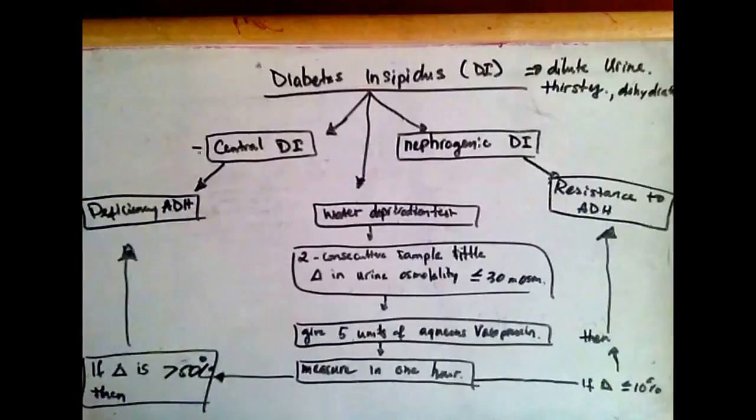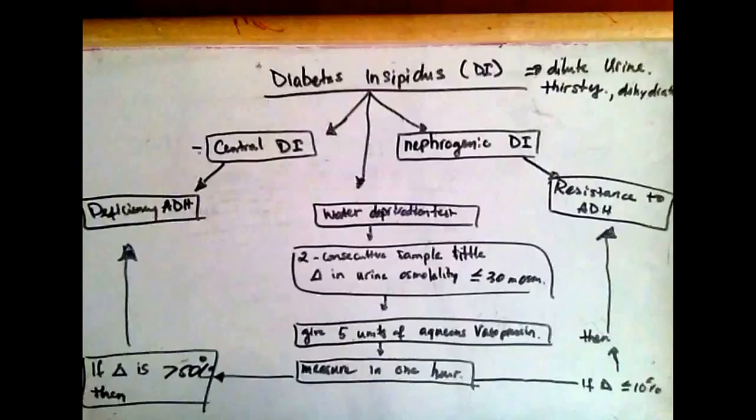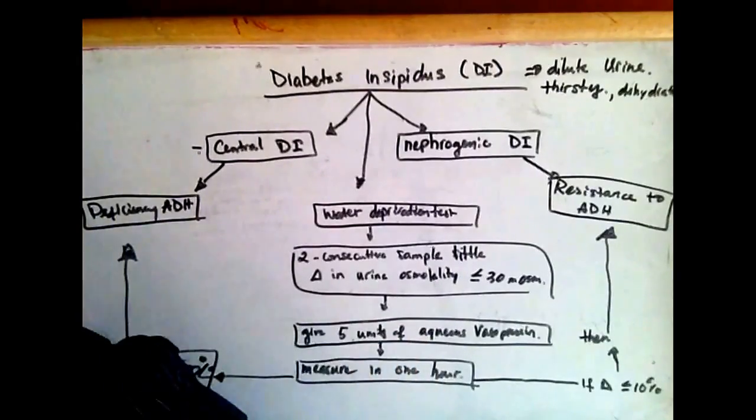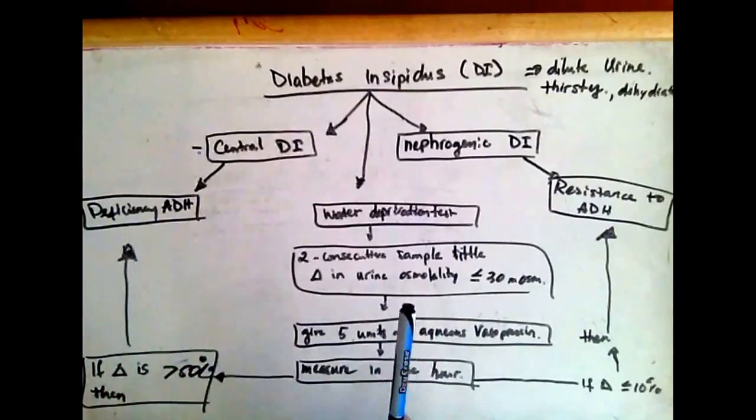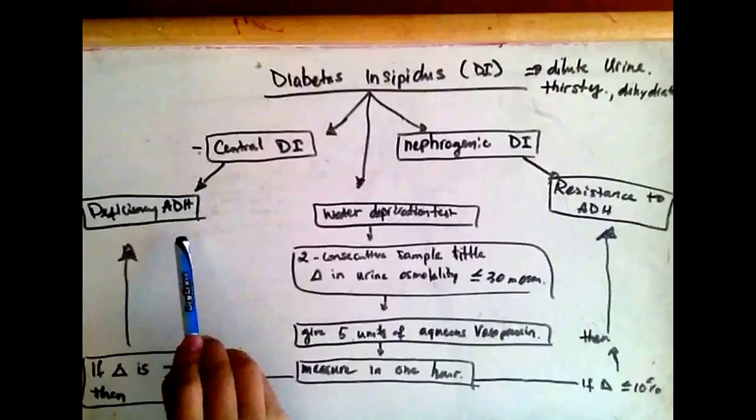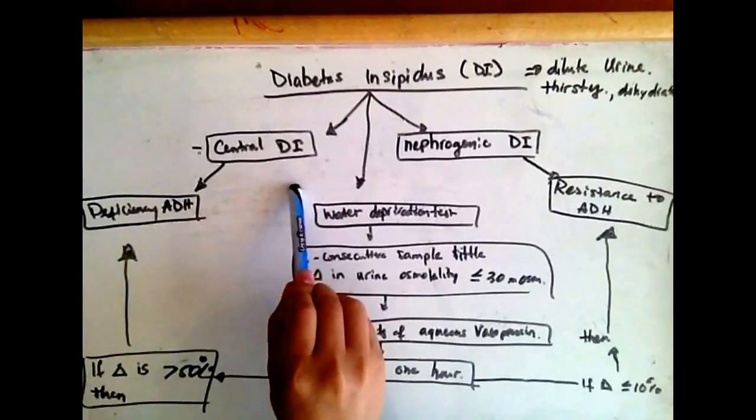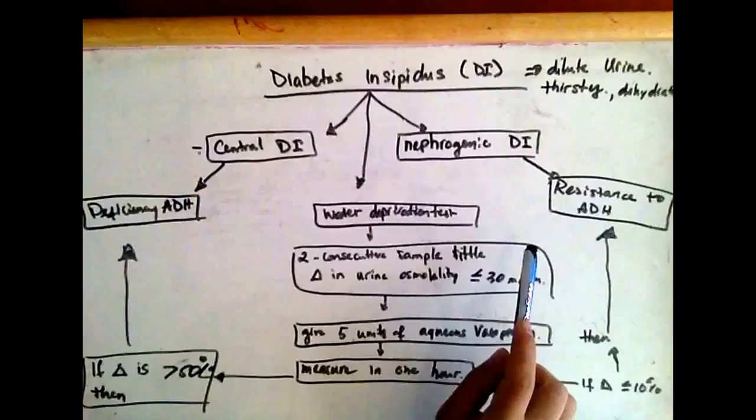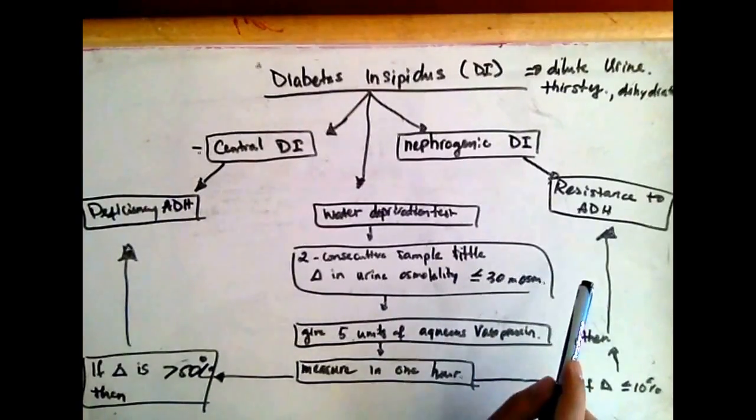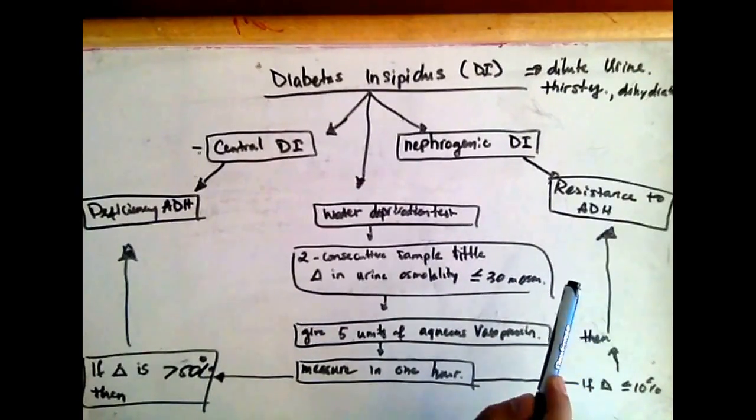Diabetes insipidus is a disease in which the patient either has a deficiency in ADH, which is central diabetes insipidus, or if the patient is having resistance to the ADH at the receptor level.